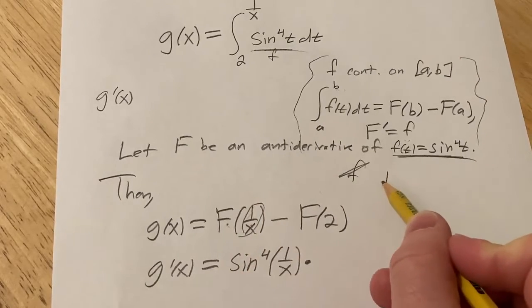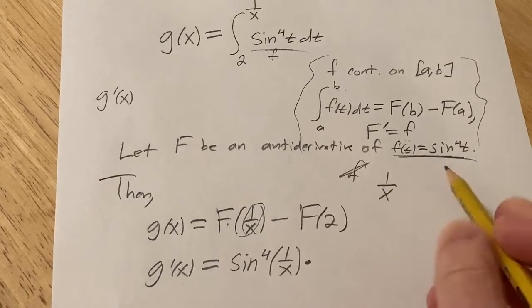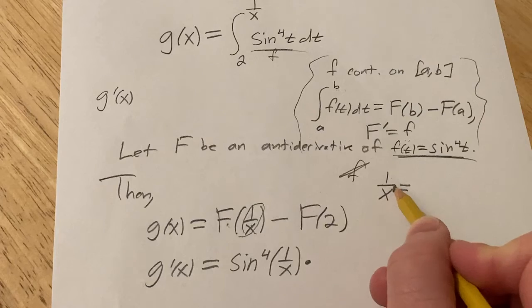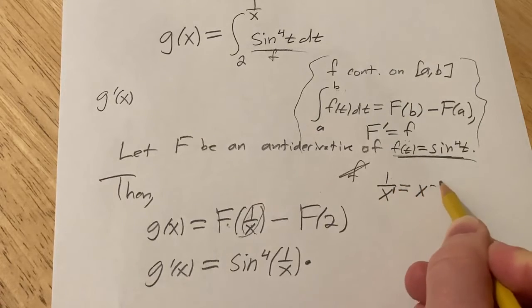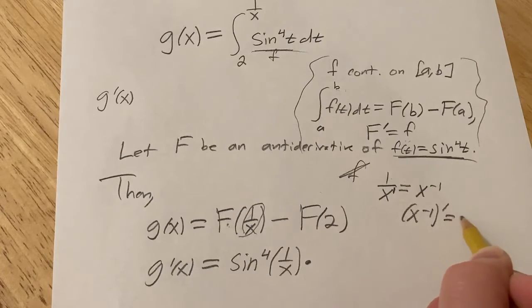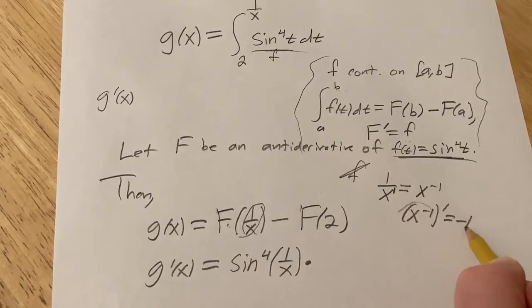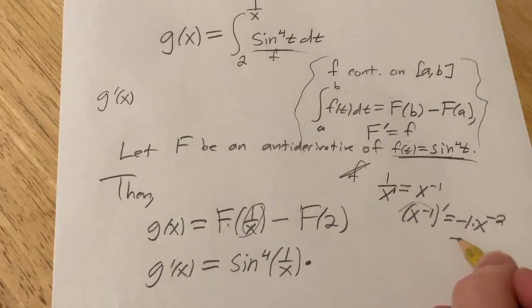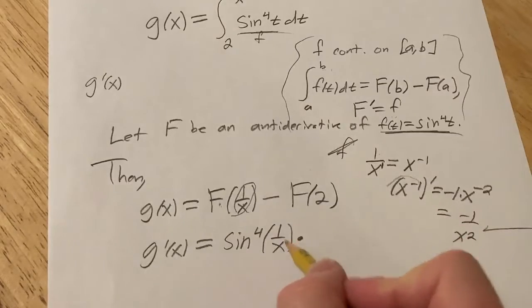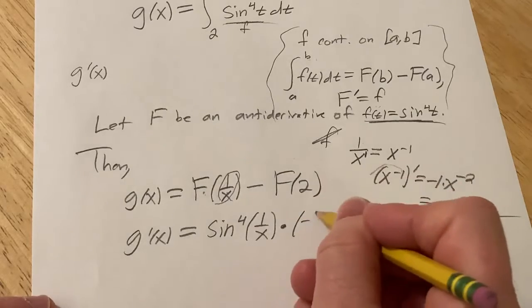So the derivative of 1 over x is negative 1 over x squared. If you don't have that memorized, it's worth memorizing. To work it out, you write it as x to the negative 1, you bring it up, and then notice when you differentiate this, basically you bring down the negative 1, and then you subtract 1 from the exponent. So times the derivative of the inside, which is negative 1 over x squared.